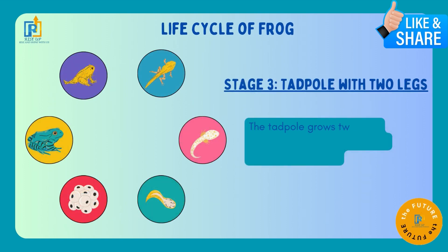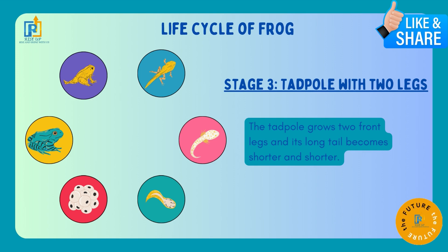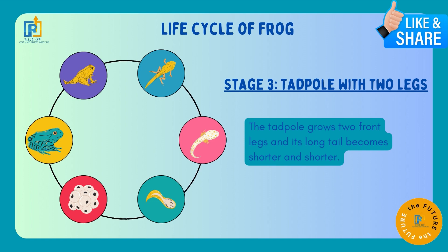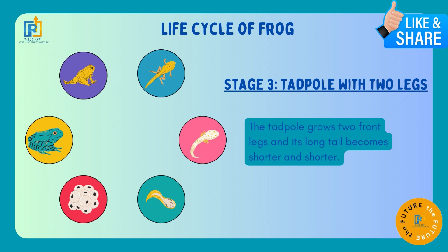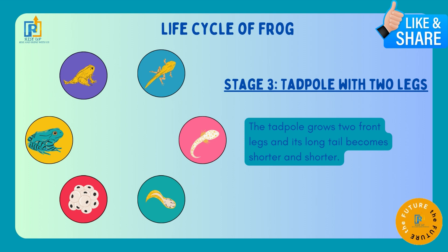Stage 3: Tadpole with two legs. Ab hum padhenge ki tadpoles ki two legs banti hain. The tadpole grows two front legs and its long tail becomes shorter and shorter. Ab hum picture mein dekh sakte hain kis tarhan ek lambi si tail hai. Jaise jaise tadpole bada hota hai, aage ki taraf se uski dho tangi nikalti hain, aur uski lambi tail short hoti jati hai.